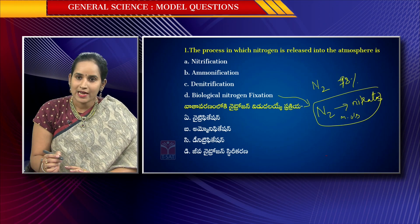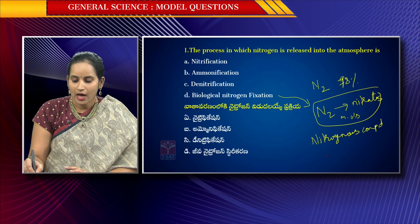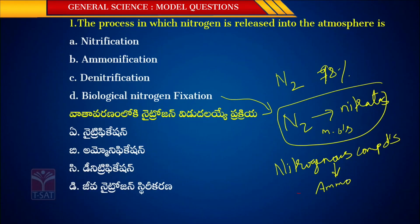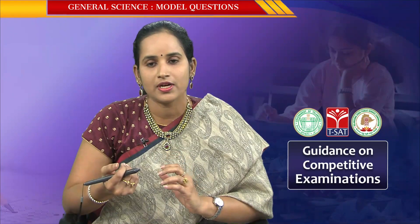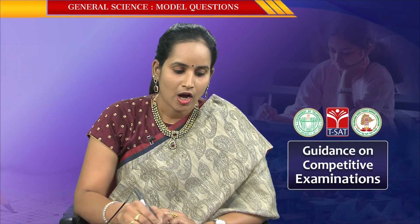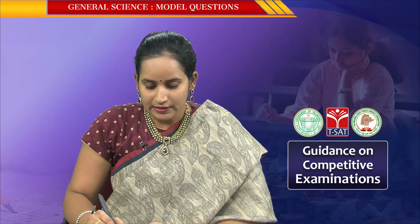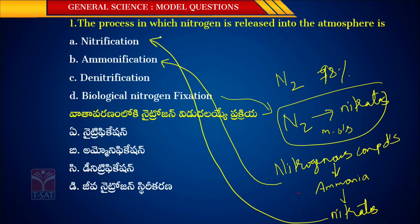When nitrogen compounds are converted into ammonia, that process is called ammonification. And when ammonia is converted into nitrates, that process is called nitrification.